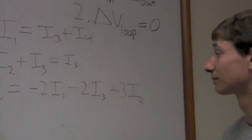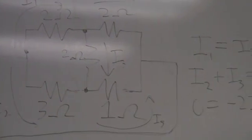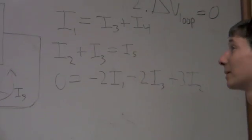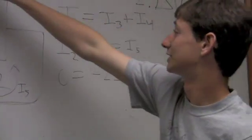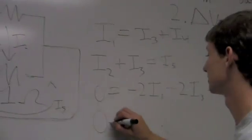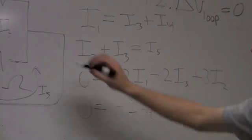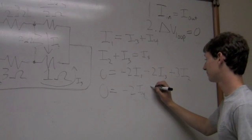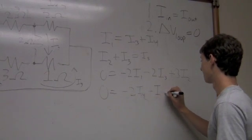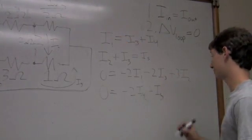So, that's one loop. Now, we can do another loop, which is I4, I5, and I3. So, we can start right here, and we'll go around this way. So, we have 0 equals negative 2I4, plus I5, plus 2I3.